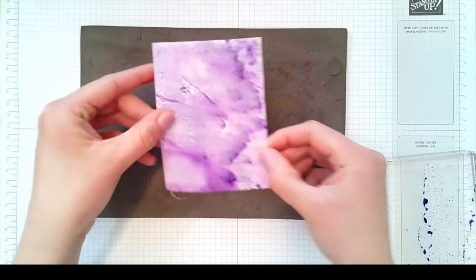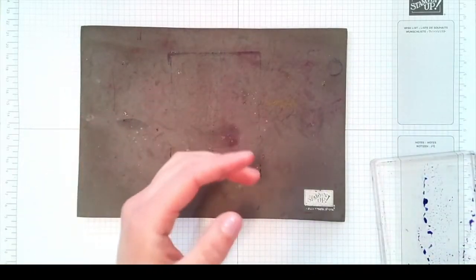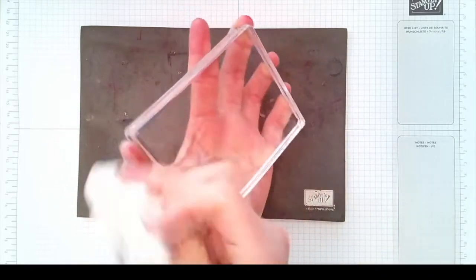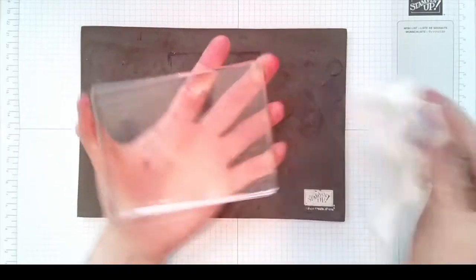Set this aside to dry. I just use a baby wipe or cloth and you can clean off your block like that. Then you're ready to use it and stamp with it again.